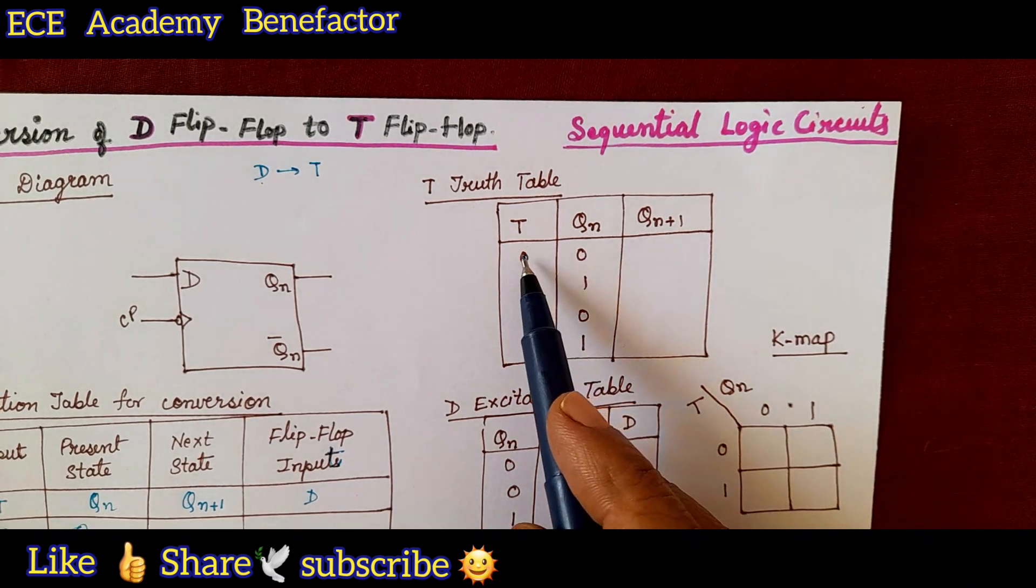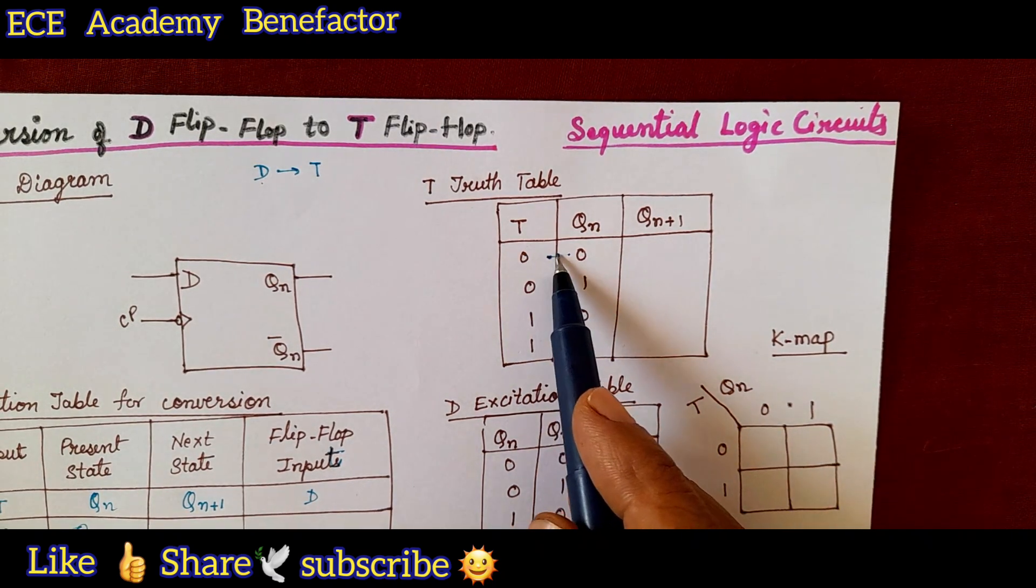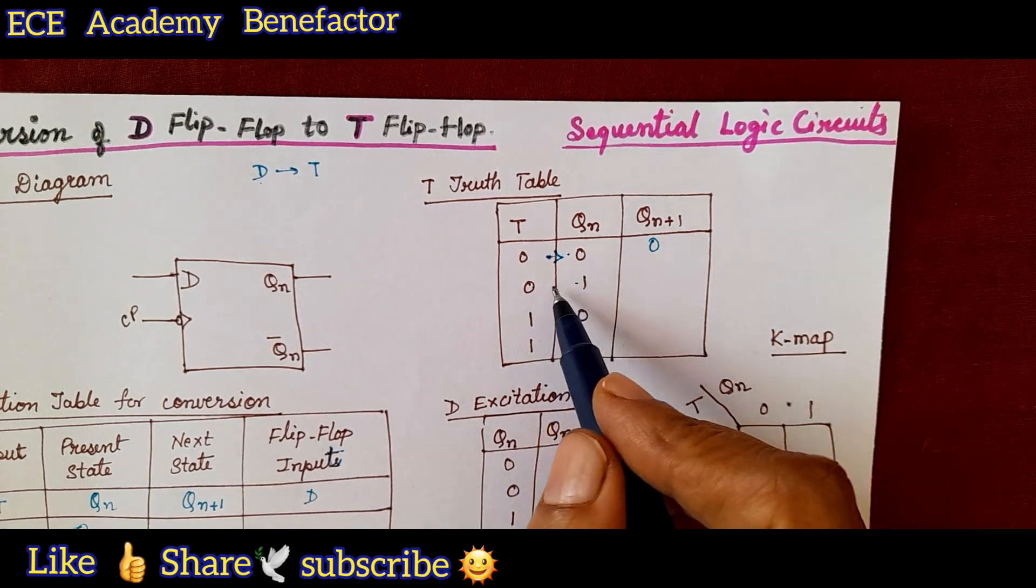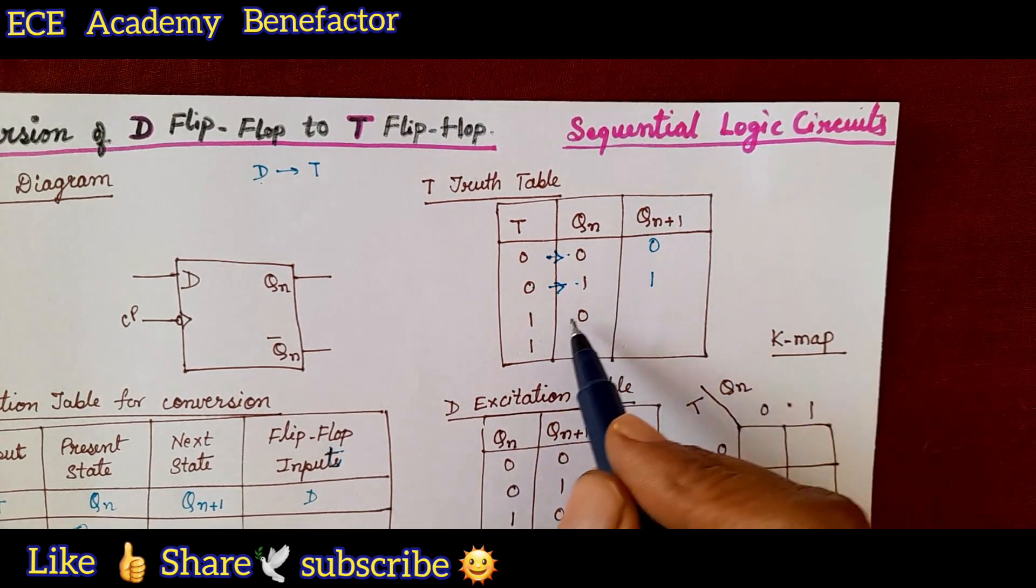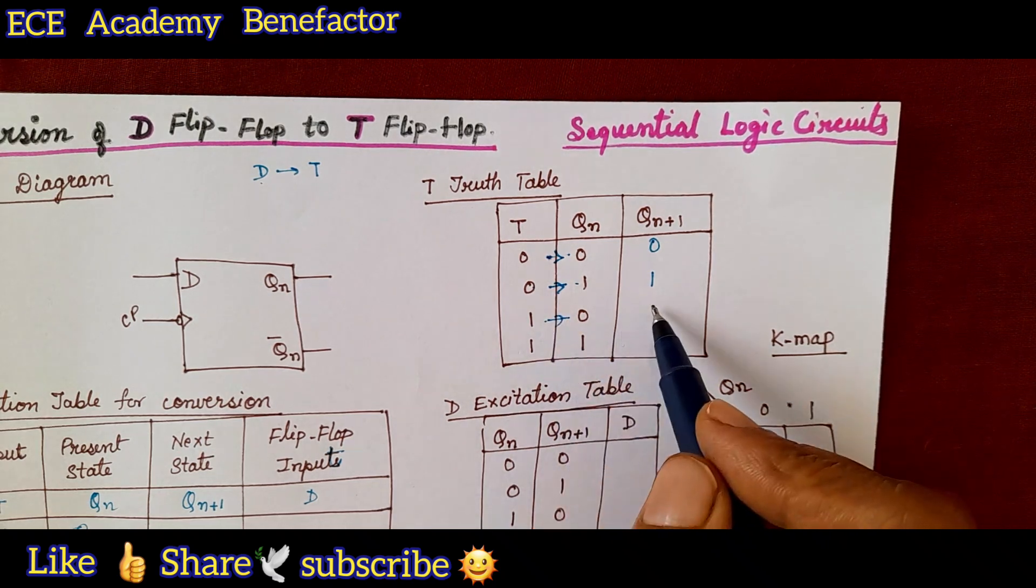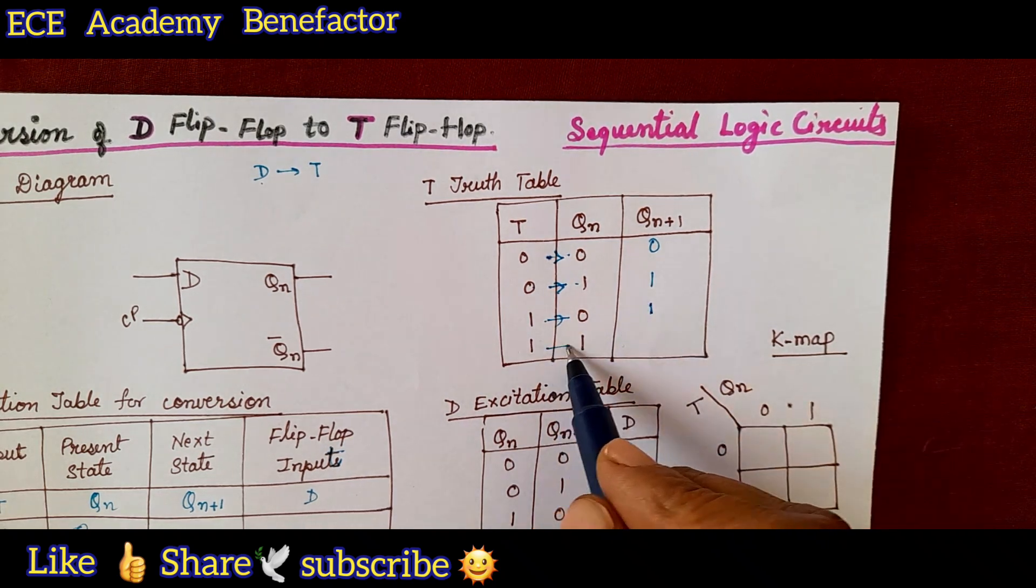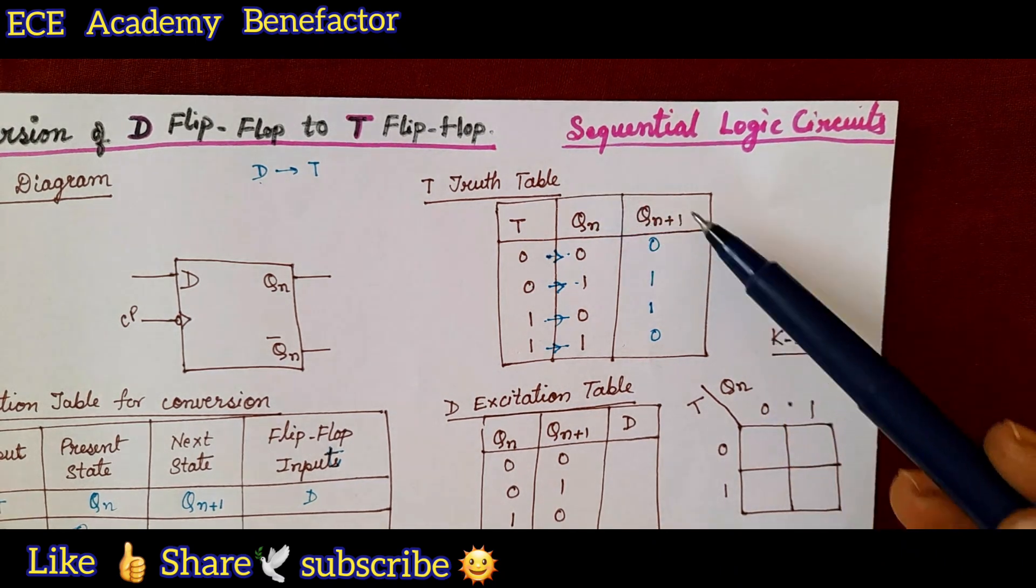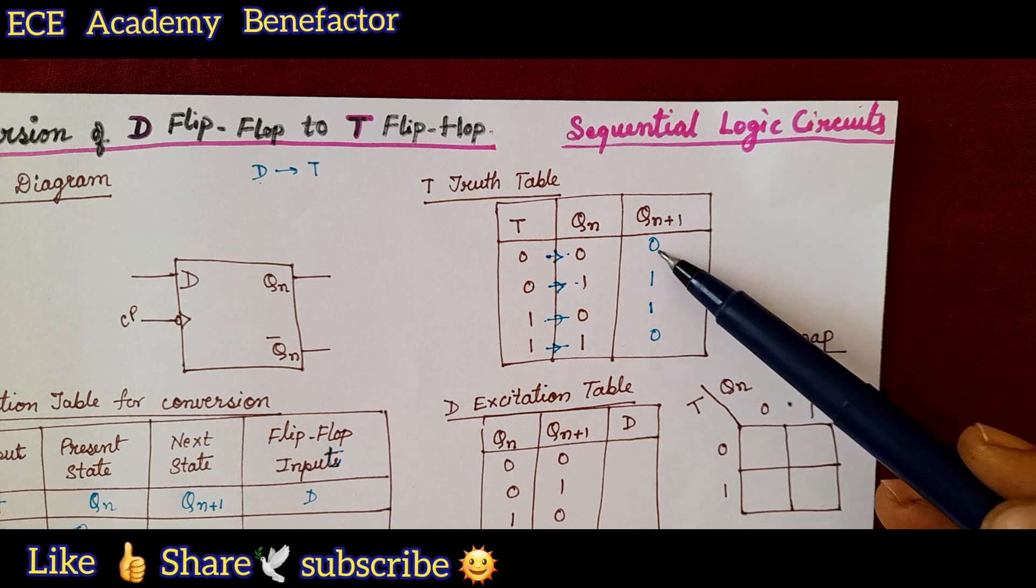T means toggling. Whenever there is a change between when you are moving T Q n no change, no change means 0. For 0 to 1 there is a change, so it becomes 1. 1 to 0 the output is 1, 1 to 1 no change so output is 0.